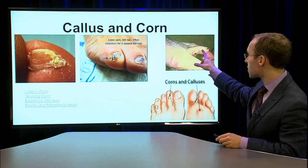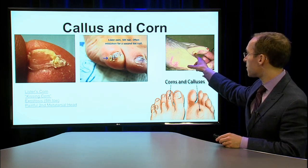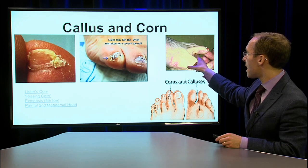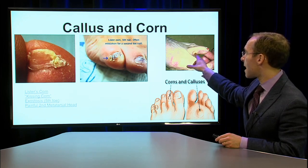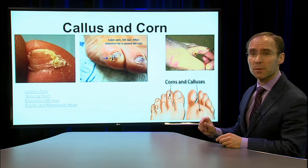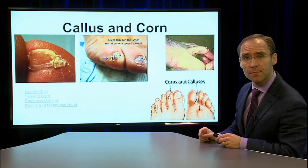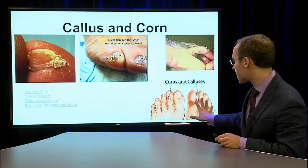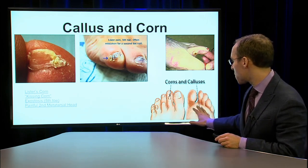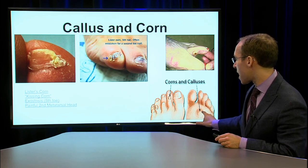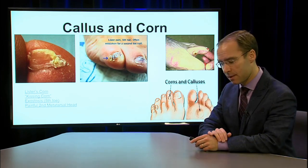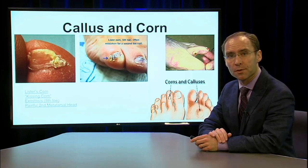There's another type that's actually seen between the toes. You can see here between the second toe — this is a very painful corn that sometimes can develop into a sore. And then we're going to talk about some corns that can be on the tops of the toes or on the bottom of the foot. There are different places that you can have these types of corns.